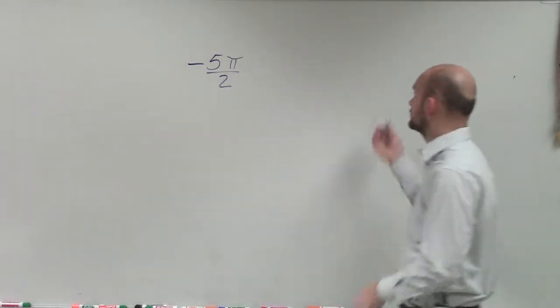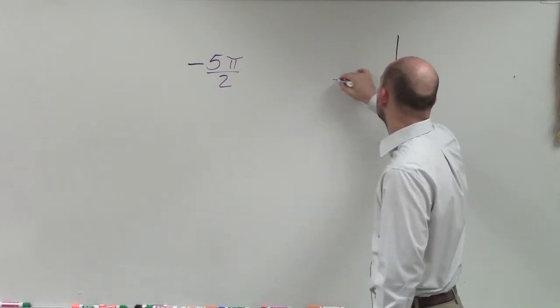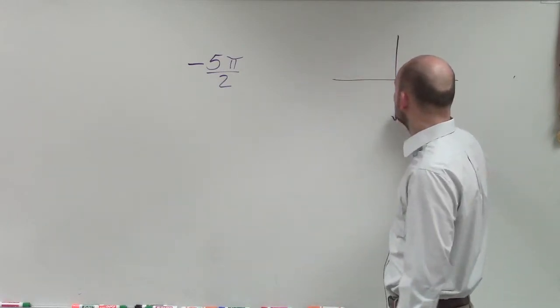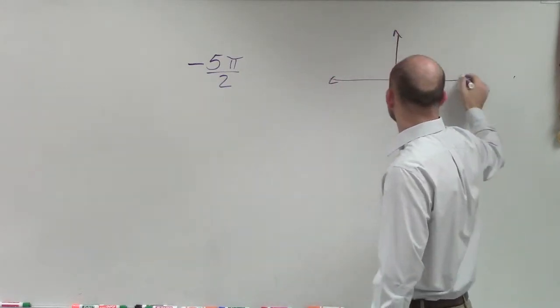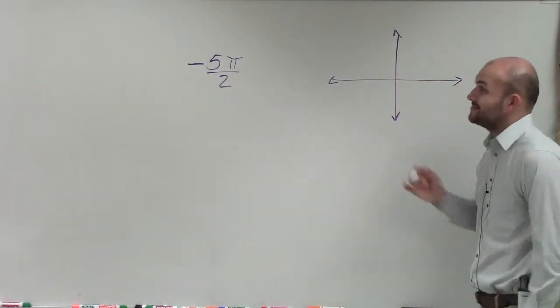The main important thing with coterminal angles is when you're trying to understand a coterminal angle, make sure you can always sketch what a coterminal angle is going to look like. So if I have negative 5π over 2,